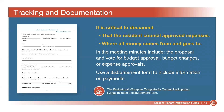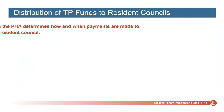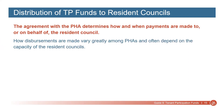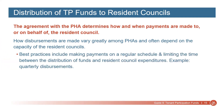The budget and work plan template for tenant participation funds includes a disbursement form. The Resident Council agreement with the housing agency will determine how and when payments are made to or on behalf of the Resident Council. How these disbursements are made vary greatly among housing agencies and often depend on the capacity of resident councils. Best practices include making payments on a regular schedule and limiting the time between the distribution of funds and Resident Council expenditures, such as quarterly disbursements. This helps the Resident Council plan for and use the funds.